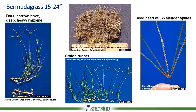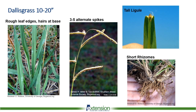The bermudagrass seed head is characterized by three to five slender, delicate spikes. Next up is dallasgrass — it has rough, wide leaves with hairs at the base. The seed head comes up in three to five alternating spikes, almost like a tree stand ladder going up with one seed head on each alternating side of the stem. It has a very tall ligule with hairs at the base and short rhizomes, much like tall fescue, but being a warm season grass it's easy to differentiate between those two.